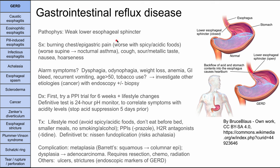A lot of people have GERD and by itself it's not super concerning. What you want to look out for are alarm symptoms that might alert you to something worse going on — essentially cancer. The alarm symptoms are dysphagia and odynophagia, difficulty swallowing and pain with swallowing. Weight loss might suggest esophageal cancer. Anemia, GI bleed, or recurrent vomiting are also concerning. Older people and tobacco users with new-onset severe GERD warrant investigation of other etiologies, which can be done with endoscopy and biopsy.